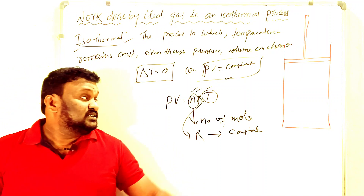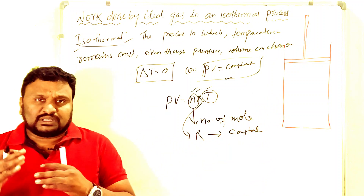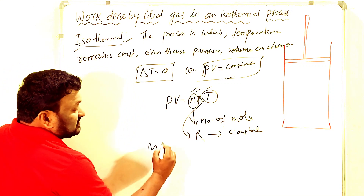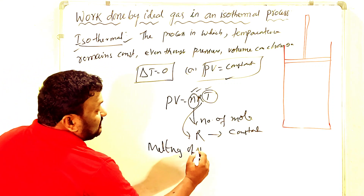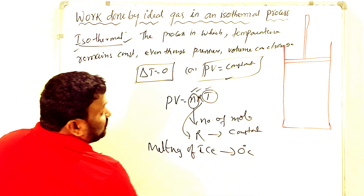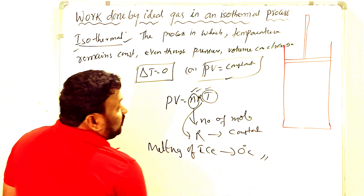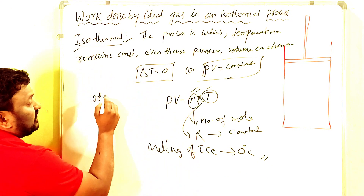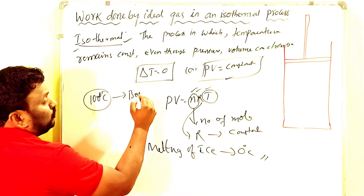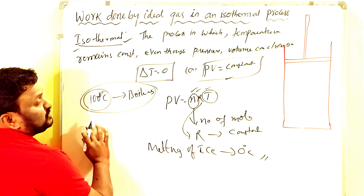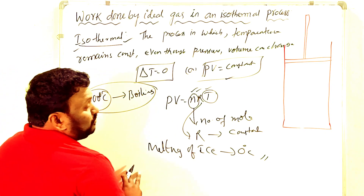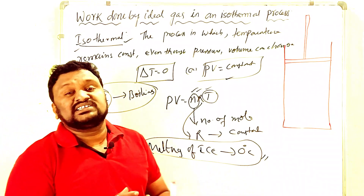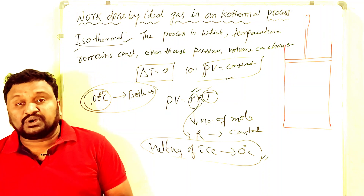The best examples given for isothermal process are: melting of ice at zero degrees Celsius, and boiling of water at 100 degrees Celsius. In practice, it is a little bit difficult to achieve an isothermal process because there is some loss of heat between the system and surroundings.